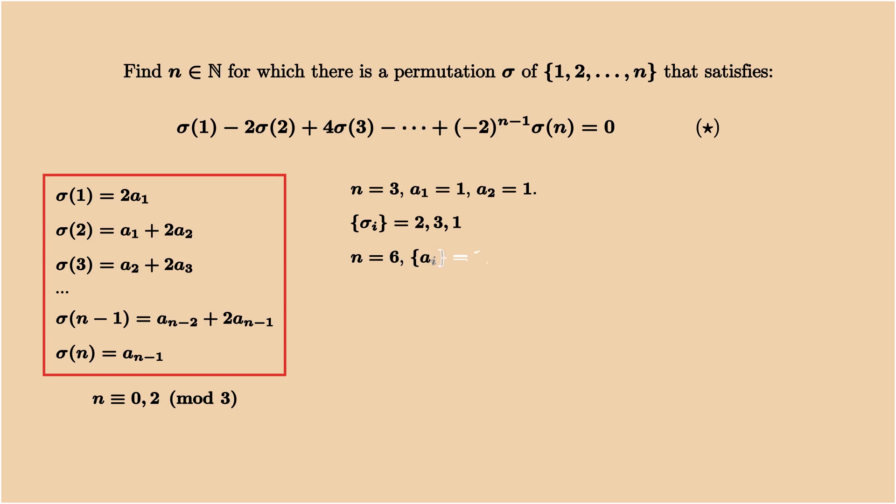When n is 6, it's not too hard to get 1, 1, 2, 1, which gives the corresponding sigma sequence as 2, 3, 5, 6, 4, 1.